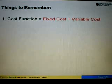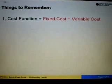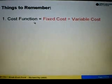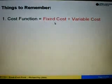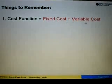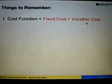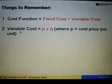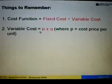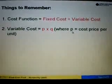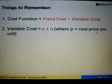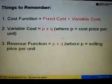Number one, the cost function is equal to fixed cost plus variable cost. Fixed cost is normally given, and to find the variable cost, variable cost is equal to P times Q, where P represents the cost price per unit.